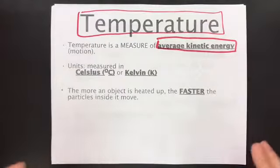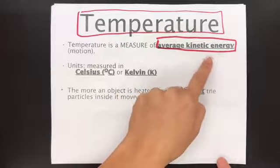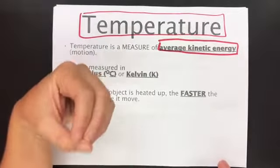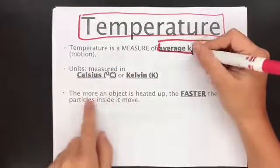Temperature is the average kinetic energy. Now you may think it's how hot or cold something is, which yes, it does also tell you how hot or cold something is. But it does that because it tells you the average kinetic energy. The faster the objects are moving, the warmer the object's going to feel.